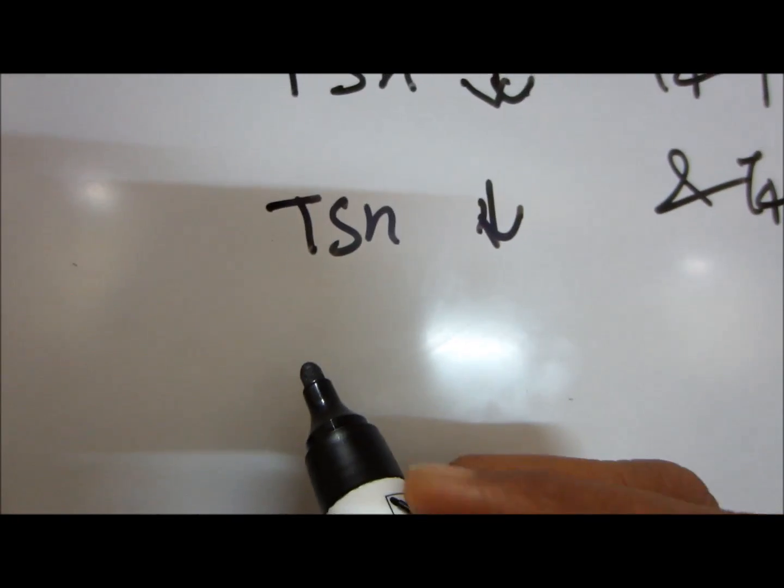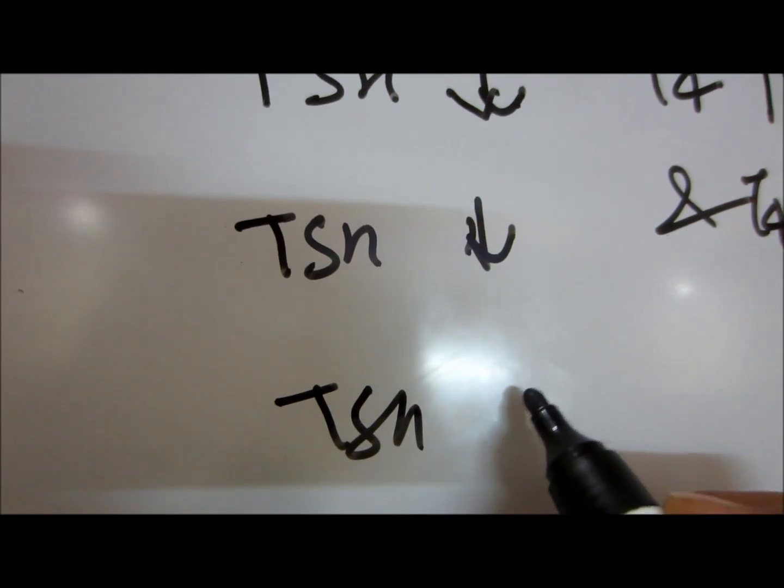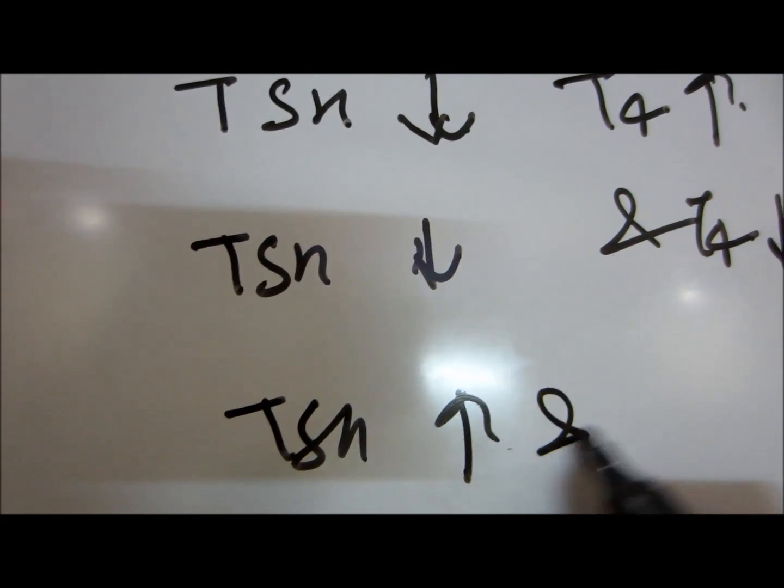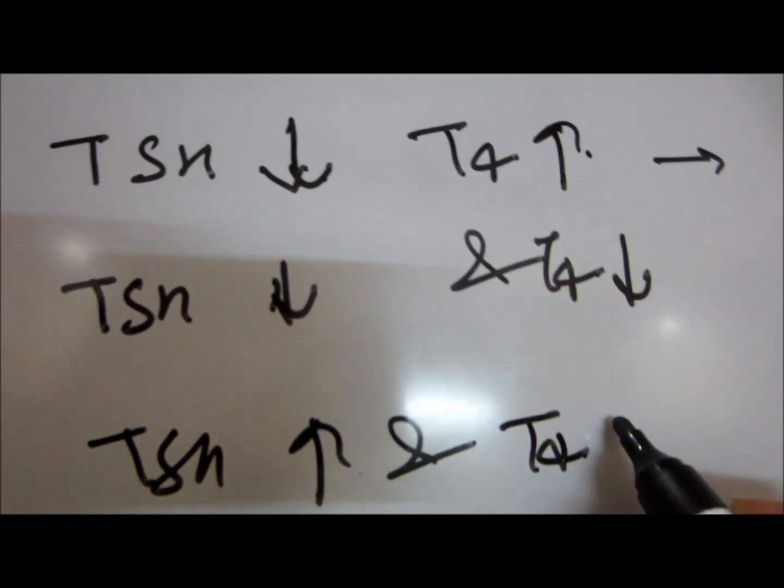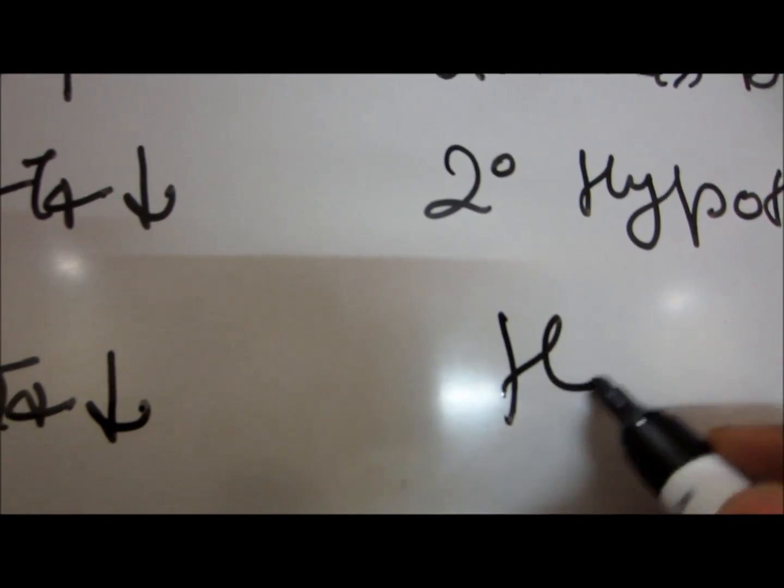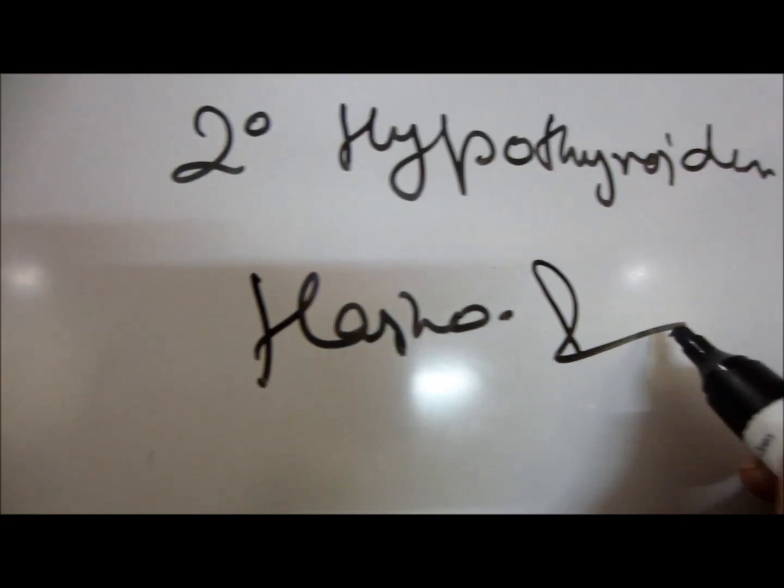Another condition is if TSH levels are high and T4 levels are low. This is seen in Hashimoto thyroiditis and cretinism.